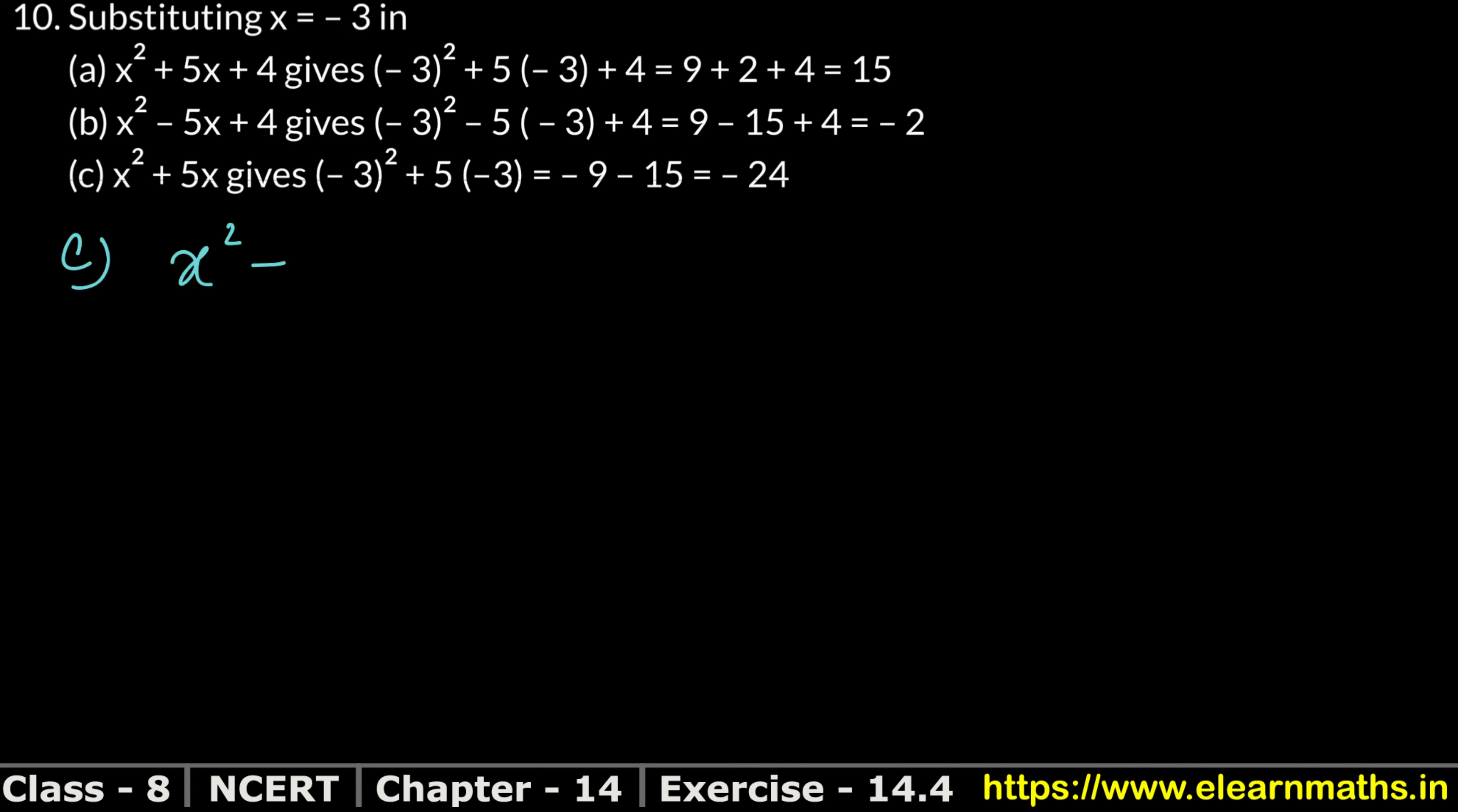Let's do third part now. Part c is x² + 5x. Now if we put x value, putting x equals to minus 3. Minus 3 squared plus 5 into minus 3. This should give minus 24. Minus 3 whole square is 9.